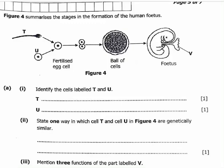Welcome to my YouTube channel. In today's video we will be finding solutions to this problem. The question states a figure that summarizes the stages in the formation of the human fetus. We have a fertilized egg cell and a ball of cells. The first question, A1, asks us to identify cells T and U. T is the sperm cell and U is the egg cell.